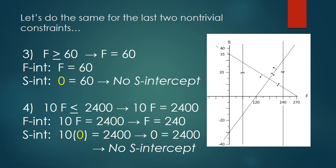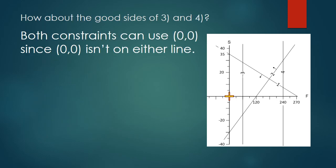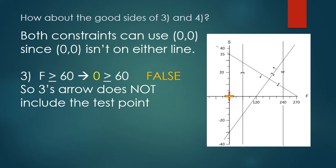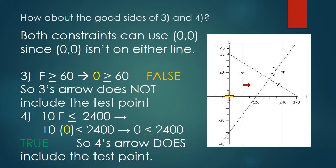I have the arrows here on line 1 and line 2. We need to find the good sides of line 3 and line 4. Can we use the test point approach? Of course we can use the test point approach, and we can use 00 because 00 is not on either of the two lines we're testing. So plug 0 in for F and S in the inequalities that represent those two constraints. F greater than or equal to 60 becomes 0 greater than or equal to 60. So arrow 3 should point away from the test point, not toward it. In a similar way, when we try constraint number 4, plugging in 0 for F and S gives us a true statement. 0 less than or equal to 2400, and so arrow 4 points toward the direction of the yellow arrow that way.